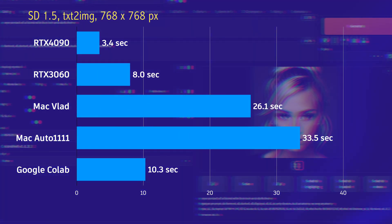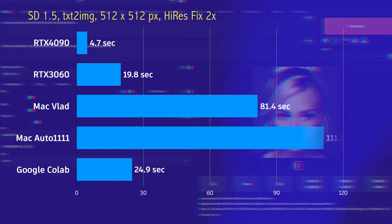At 768x768, the performance gap gets even bigger and the RTX 4090 is the clear winner. When we turn on the high-res fix, the Mac totally gets out of control. Also the 3060 and Google Colab are not as performant anymore, while the 4090 doesn't seem to have any performance issues.